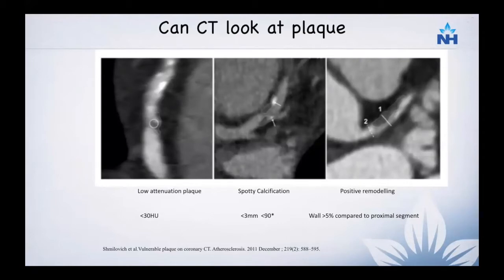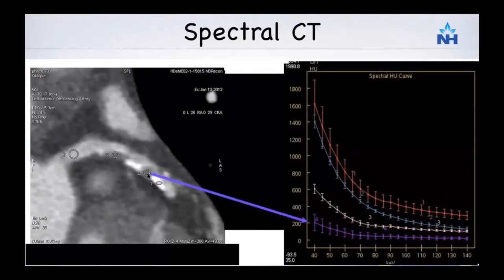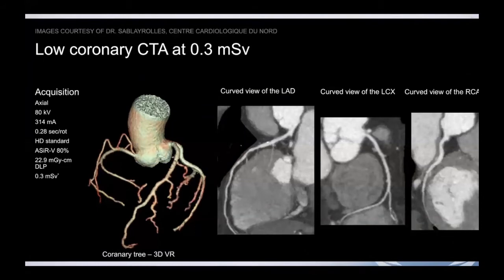Regarding plaque characterization, CT is good at differentiating vulnerable plaques. Newer advances in spectral CT allow us to tell whether a plaque is lipid-rich or fibrotic. This is still not 100% accurate and we are working on it. Regarding radiation exposure: with a high-end CT scanner and good heart rate control, the radiation burden is negligible — around 0.3 millisievert — whereas standard catheter angiography is in the range of 7 to 10 millisievert. You do need a high-end scanner and low heart rate to achieve these radiation doses.